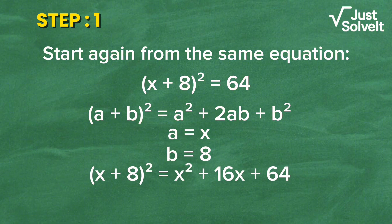So (x + 8) squared equals x squared plus 16x plus 64.